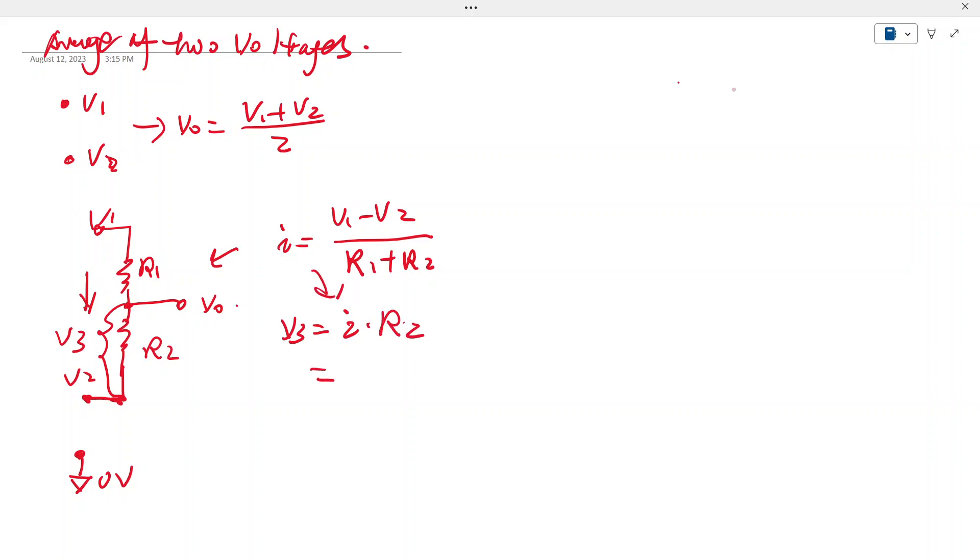Now you can put R2 back in, current back to V1 here. We got V1 minus V2 divided by R1 plus R2 times R2.